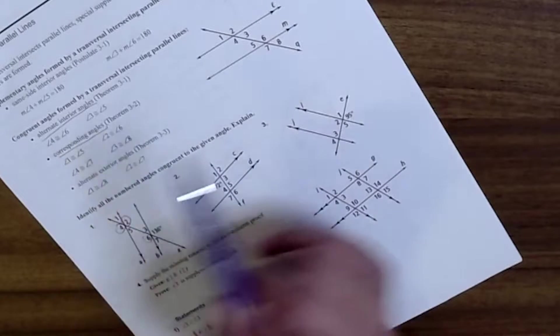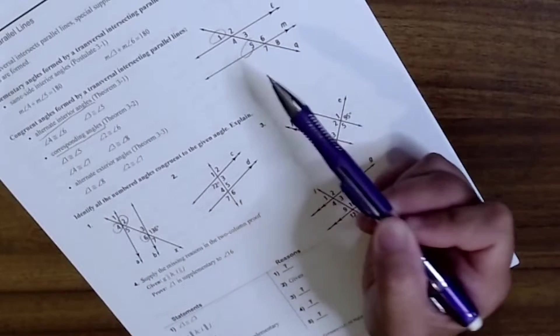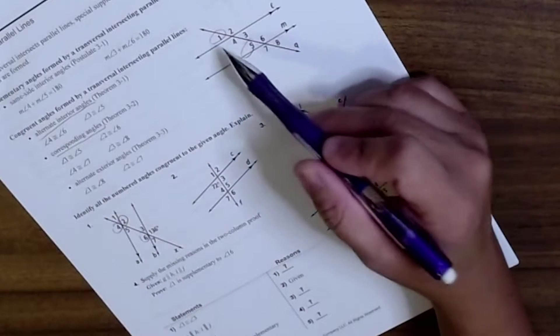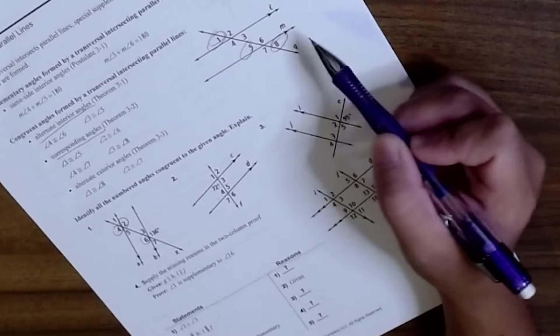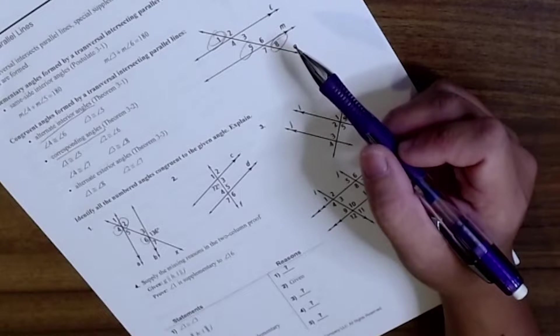Corresponding angles, so like in this case, 1 and 5 are congruent, and alternate exterior angles would be like 1 and 8, and those are also congruent.